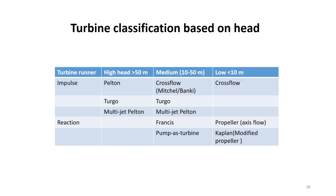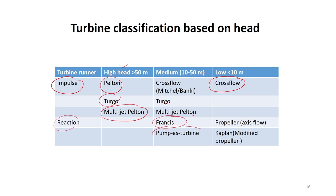Under impulse turbines we have Pelton, Turgo, and multi-jet Pelton — used for high head. For medium head, cross-flow and Turgo; for low head, cross-flow. Under reaction turbines: for medium head, Francis turbine and pump-as-turbine; for low head, propeller and Kaplan (a modified propeller with adjustable blades). When blades are adjustable it is called a Kaplan turbine; otherwise it is a propeller turbine.